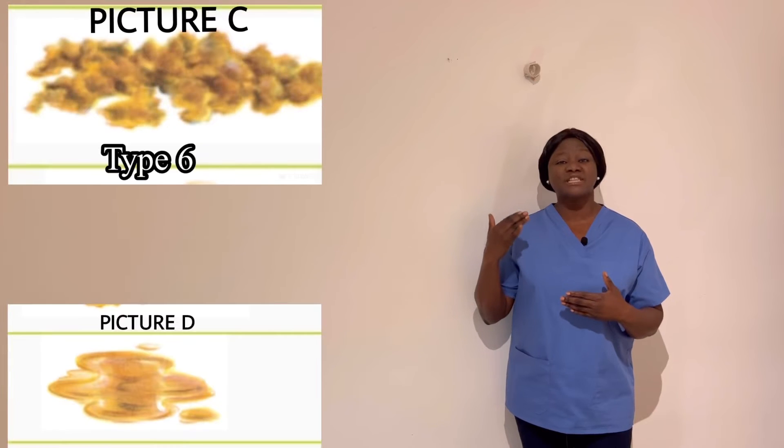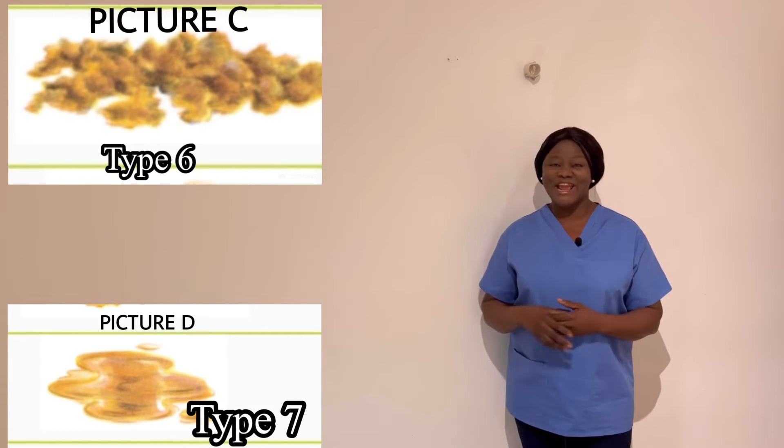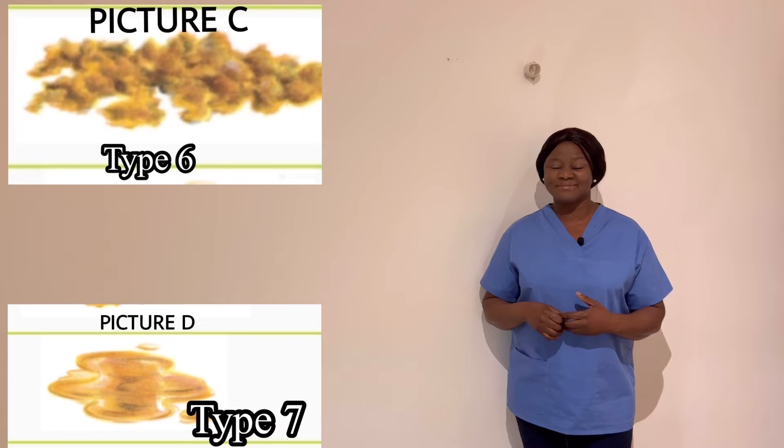For type B, which is also a form of constipation, the causes and the plan of care to resolve this remain the same. Now let's move to the diarrhea types, which are C or D, or types 6 and 7. It's likely you'll be given a scenario of a patient having a form of diarrhea and provided with a picture.